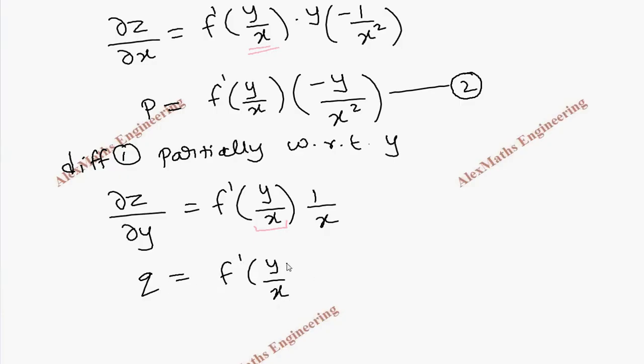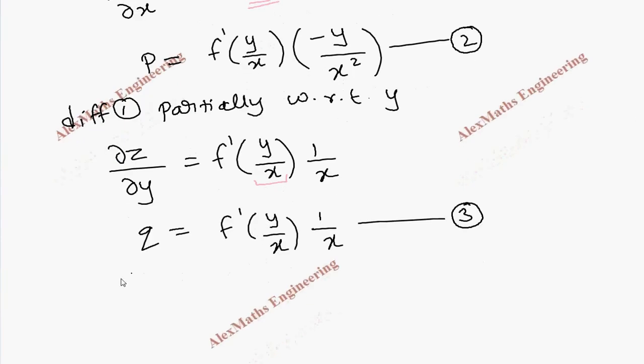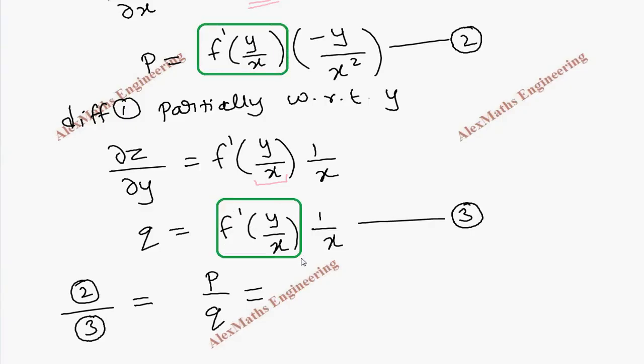Now to eliminate the function, we're going to divide the second expression by the third expression. So this is p/q on the left hand side. While dividing, f'(y/x) gets cancelled on both sides.